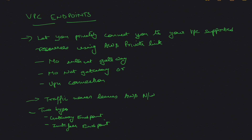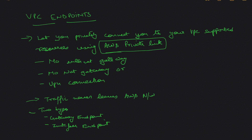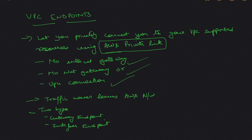We'll be talking about PrivateLink in a separate video, so I won't go into the details of what PrivateLink is. What does having VPC endpoints mean? Suppose you have an EC2 instance and you want to connect to S3 — normally the traffic would go via an internet gateway or a NAT gateway. What a VPC endpoint does is it removes the dependency on either your NAT gateway, internet gateway, or VPN connection, so you can privately go from your EC2 instance to your S3 bucket.